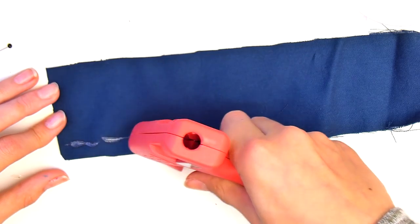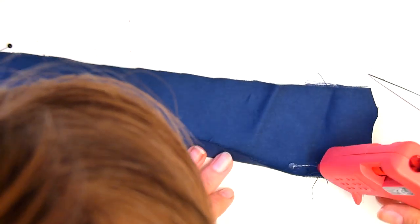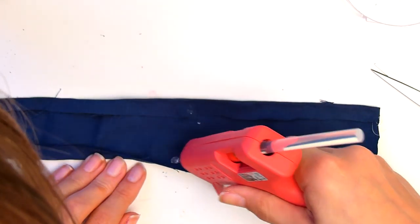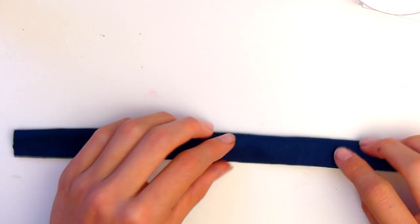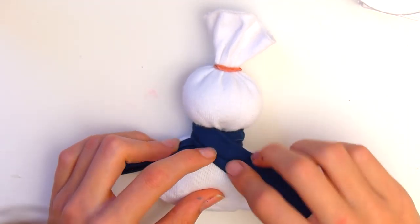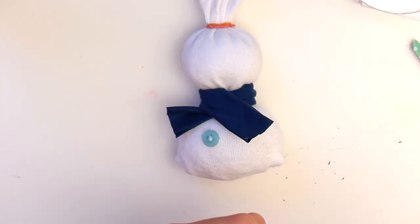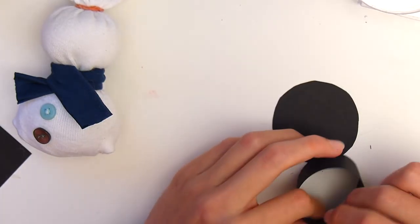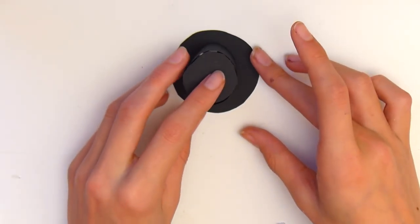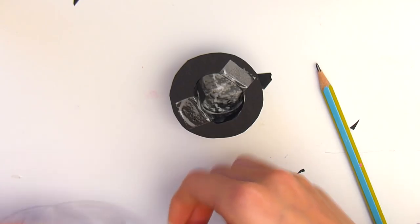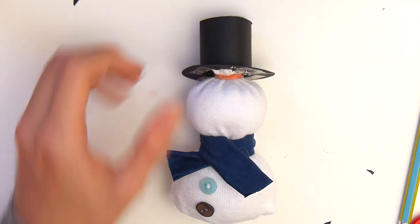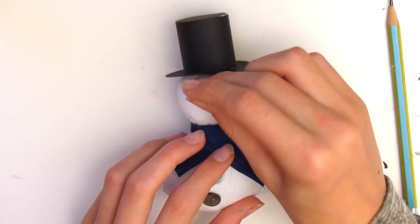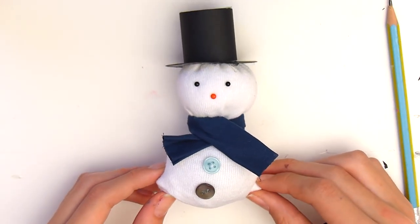Maintenant on va faire l'écharpe du bonhomme de neige. J'ai découpé un rectangle de tissu et je fais 2 ourlets de chaque côté pour cacher les petits fils qui dépassent. Je recolle ce bout de tissu en deux pour avoir une jolie écharpe bien nette, puis je la fixe autour du cou pour cacher l'élastique. Je fixe ensuite 2 petits boutons pour la déco. Pour le chapeau, je découpe un rond dans du papier noir et une bande pour faire le haut. Je referme le haut avec un autre petit rond et fixe le tout avec de la colle. Je fixe ensuite le chapeau sur le bonhomme de neige. Pour le visage j'ai pris des petites épingles, 2 noires et une rouge. Et voilà le travail.